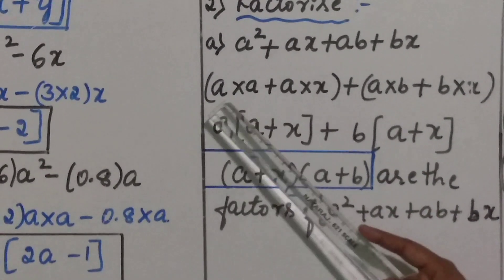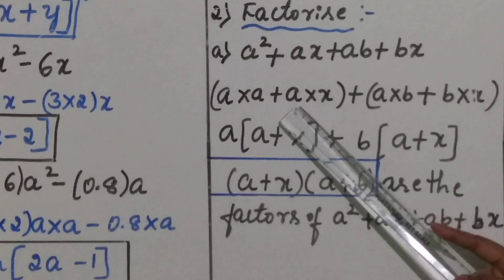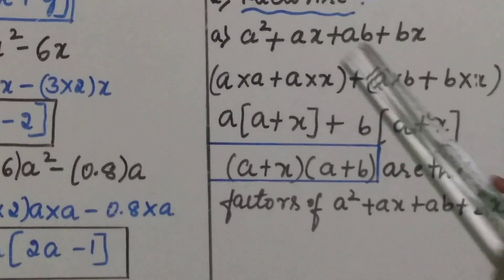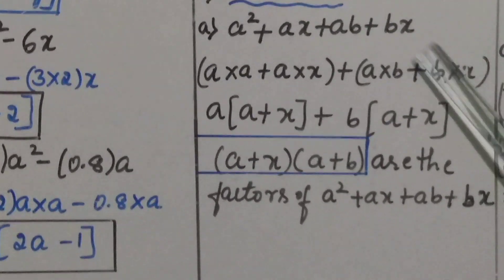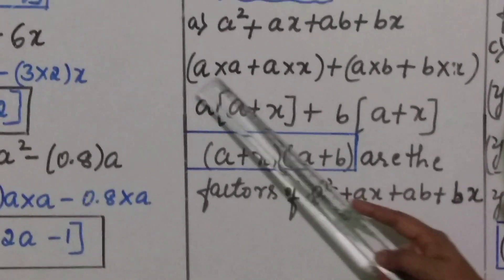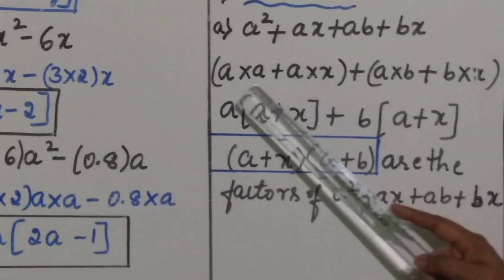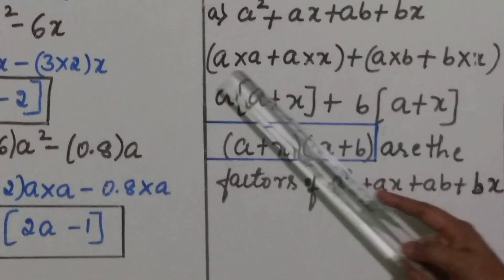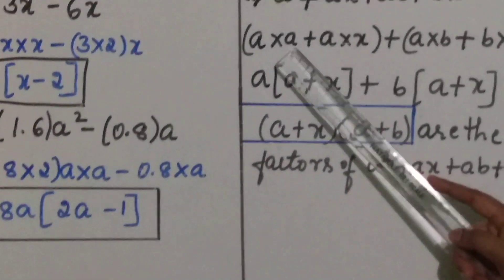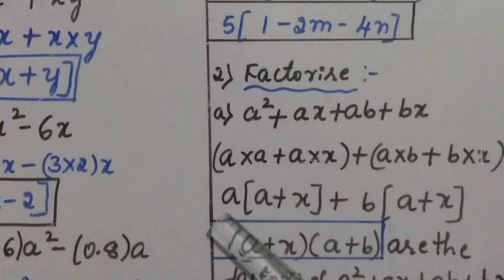In the first group: a square is a into a, plus a into x. Now observe carefully — which is the common factor in the first group? Looking at both terms, a is the common term. Taking a outside the bracket, the remaining terms are a plus x. This is the common factor of the first group.